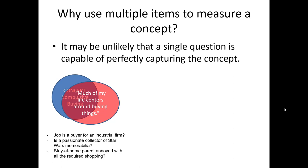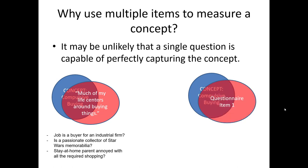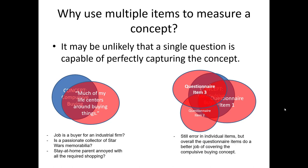A fair question is: why use multiple items to measure a subjective property? The answer is that it's often unlikely a single question is capable of perfectly capturing the concept we're interested in. For example, consider the item 'Much of my life centers around buying things.' This item has some overlap with compulsive buying, but also misses the mark — a professional buyer for an industrial firm, a passionate Star Wars memorabilia collector, or a stay-at-home parent frustrated with required shopping might all score high, yet none of them are compulsive buyers. Using multiple items allows us to capture all the different subtle domains of the concept in aggregate.